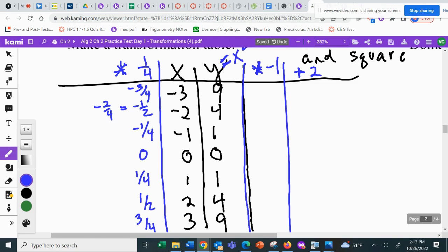Then I multiply my y values by negative one. So I get negative nine, negative four, negative one, zero, negative one, negative four, negative nine. And then I add two. So negative seven, negative two, one, two, one, negative two, negative seven.